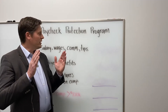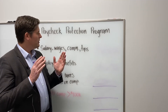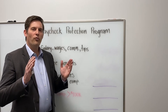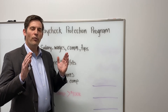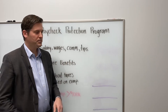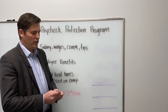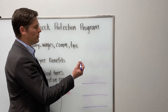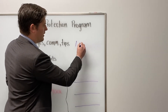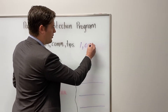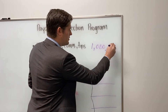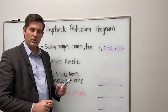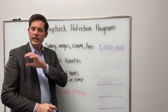First, you have to find out the total amount of salary, wages, commissions, and tips in the 12 months before you do your application. For ease of calculation, let's say you work with your bookkeeper and find that the total here was $1,000,000. The next component is employee benefits.